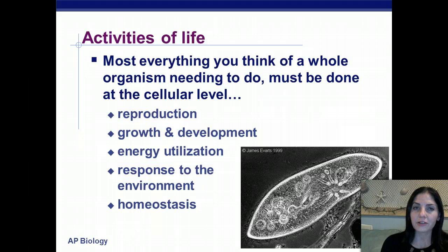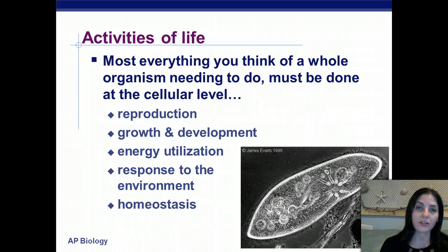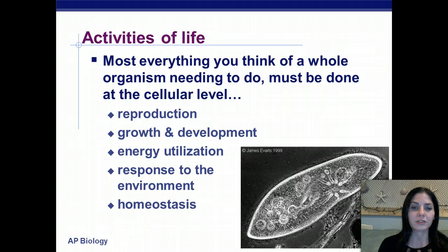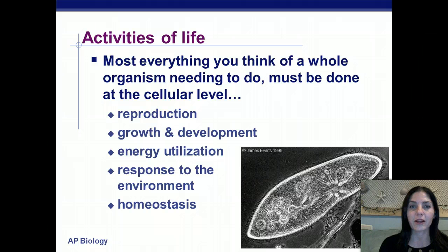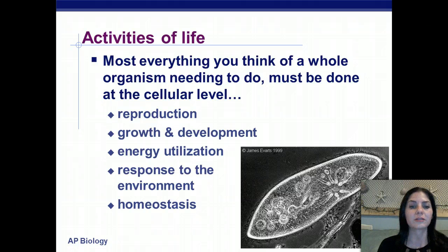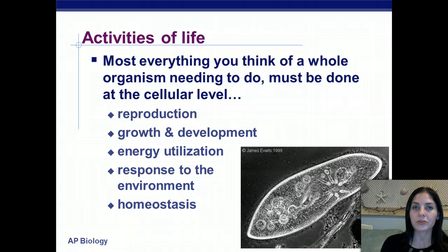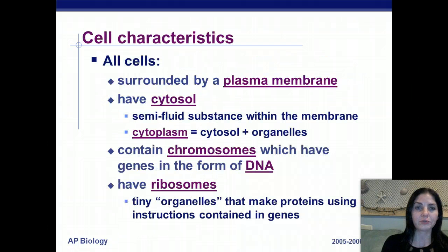On a cellular level, cells reproduce, grow, and develop. They utilize energy through the process of cellular respiration as well as photosynthesis. They respond to their environment — for example, if placed in a hypertonic or hypotonic environment. They also maintain homeostasis, just like we do.